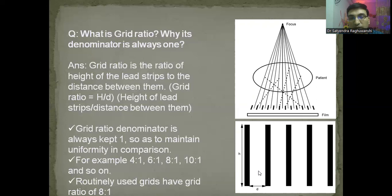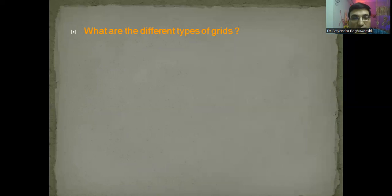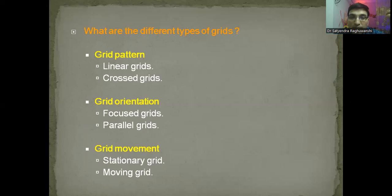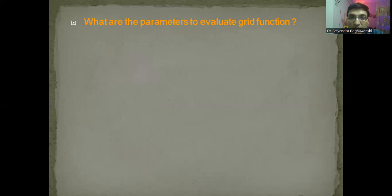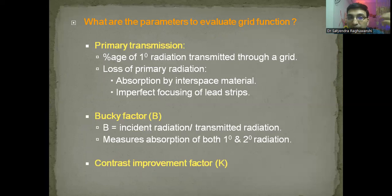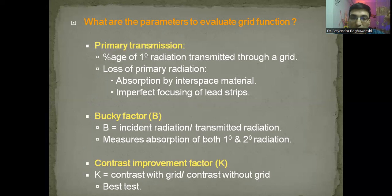Then he might ask: what are the various types of grids? Grids can be divided by grid pattern, grid orientation, and grid movement. Based on pattern: linear or cross grids. Based on orientation: focused or parallel grids. Based on movement: stationary or moving grid, also known as Bucky. How do you evaluate grid function? Remember as PBC: Primary transmission — percentage of radiation transmitted through the grid; Bucky factor — incident radiation upon transmitted radiation; and Contrast Improvement Factor — ratio of contrast with grid upon contrast without grid, since the grid improves contrast.